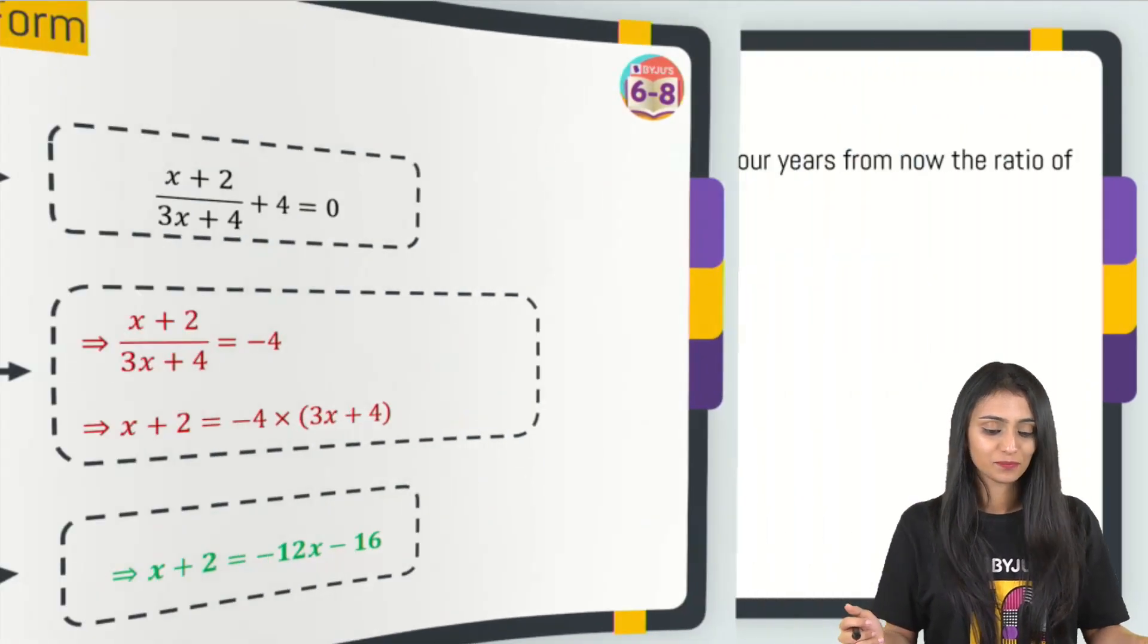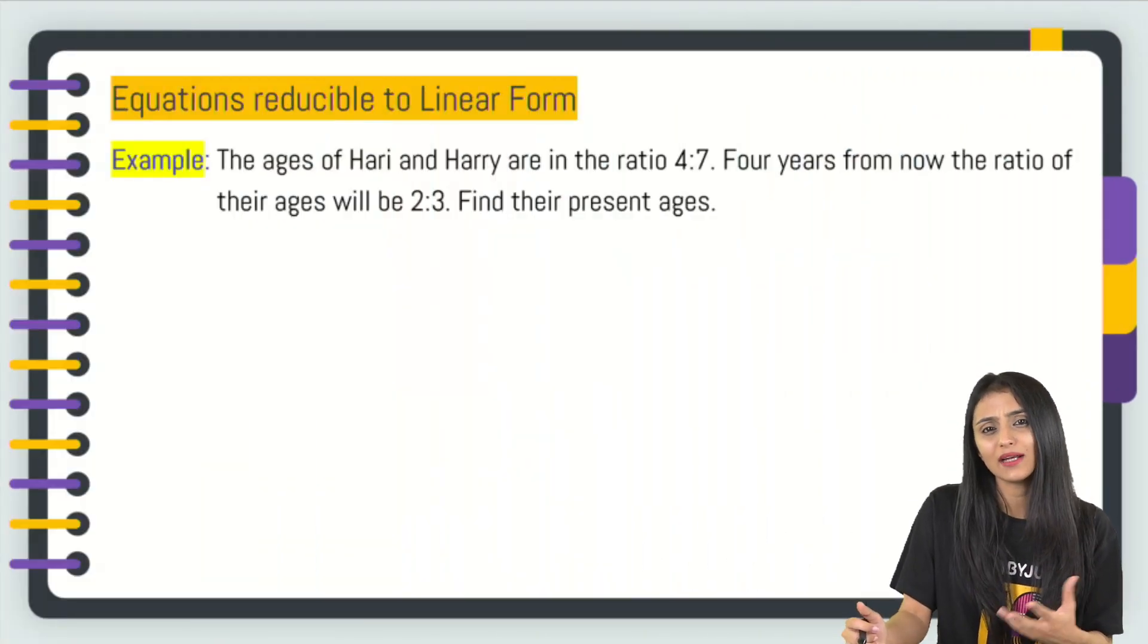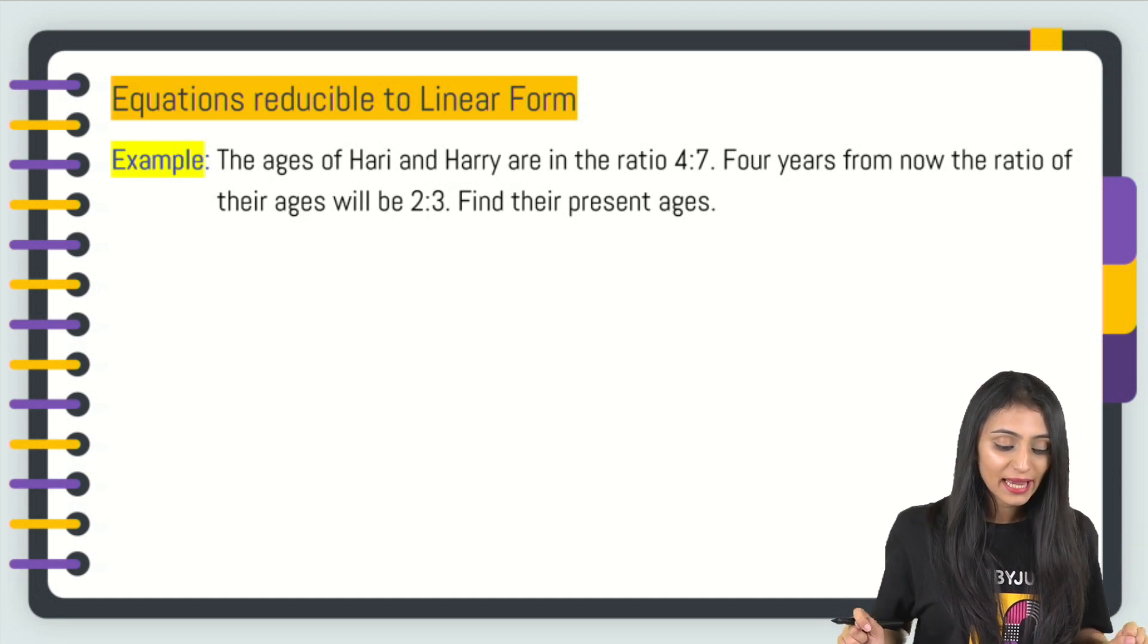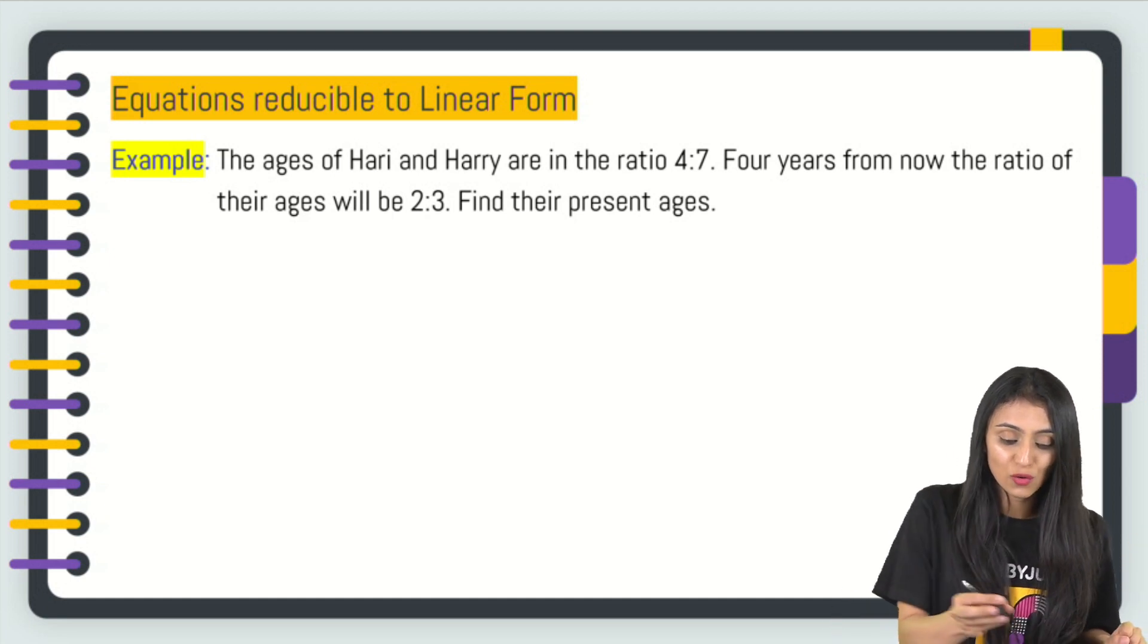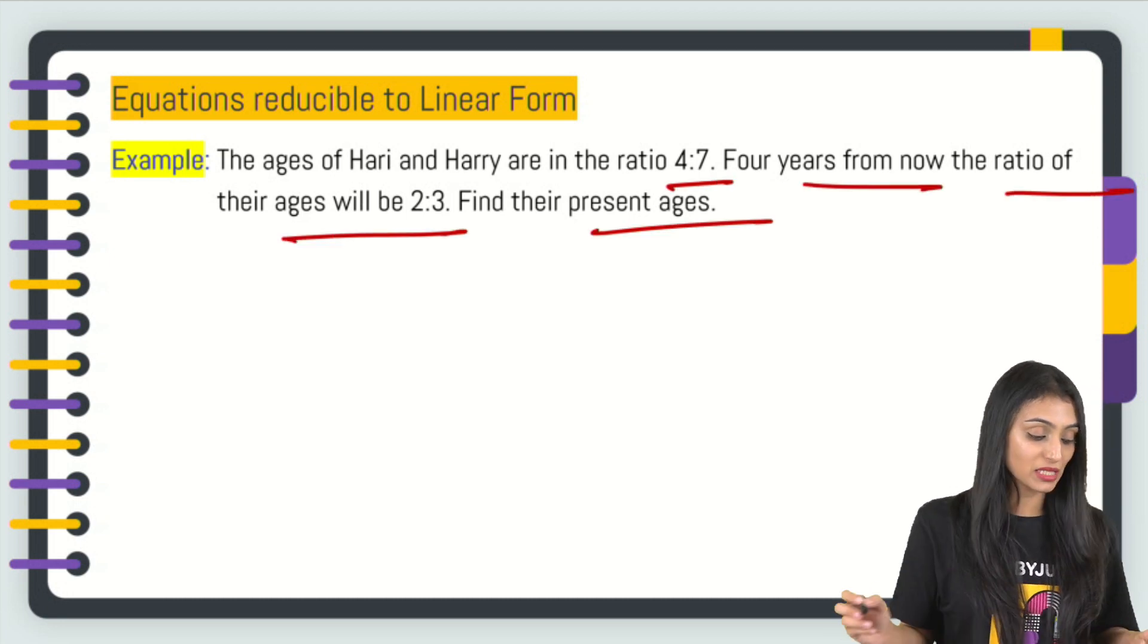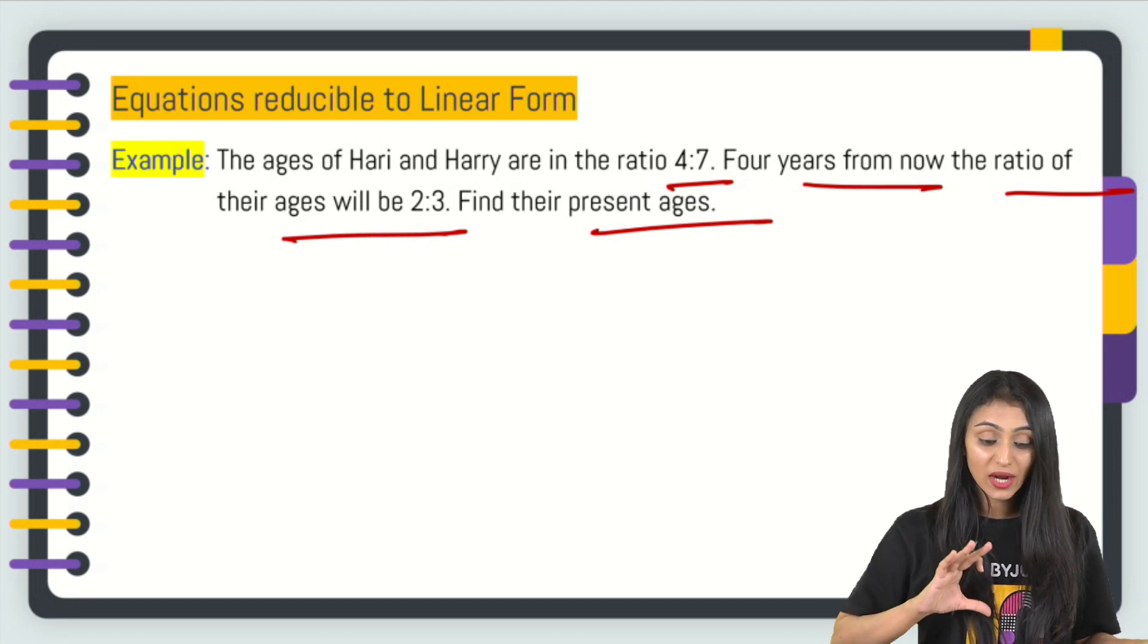I think word problem is something where maximum students face challenges, so let's discuss that. The ages of Hari and Harry are in the ratio 4:7. Four years from now, the ratio of their ages would be 2:3. Find their present ages.